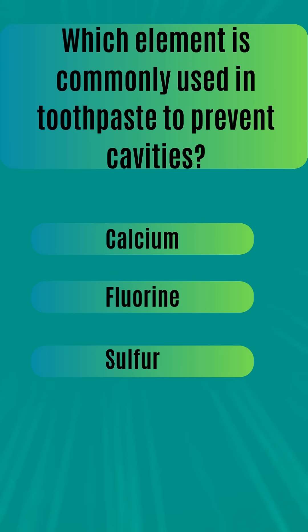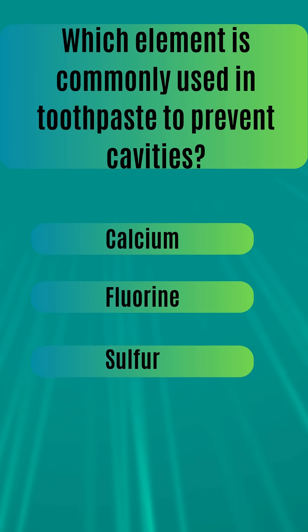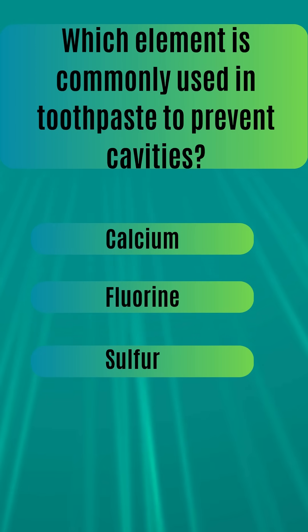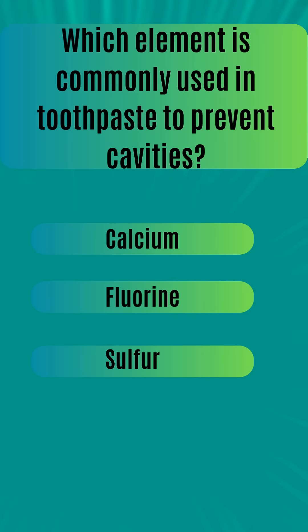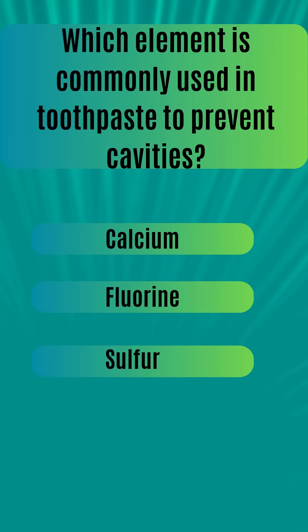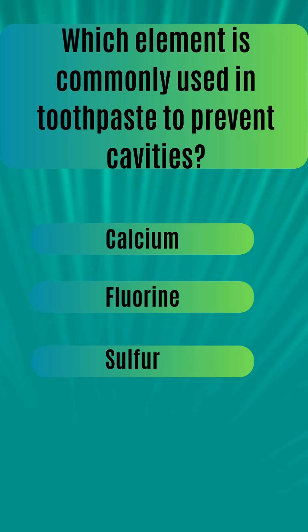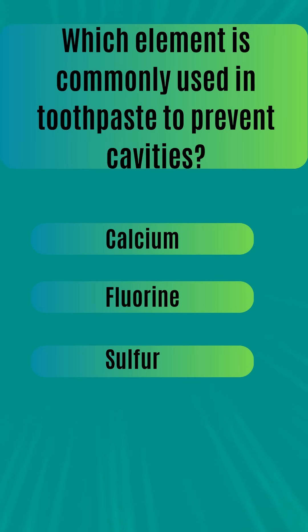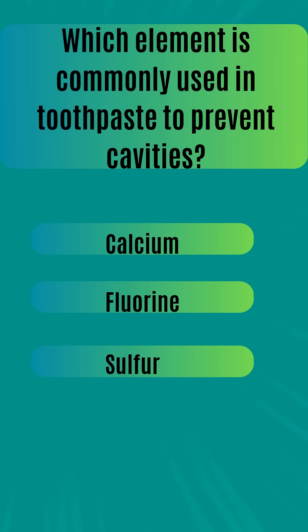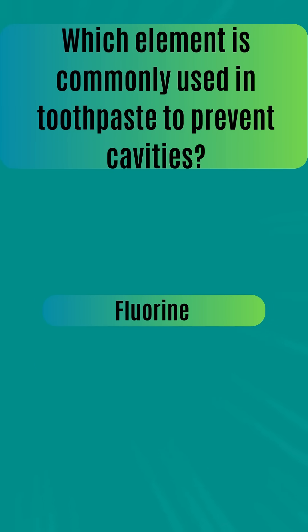Which element is commonly used in toothpaste to prevent cavities? Calcium, fluorine, sulfur. The answer is fluorine.